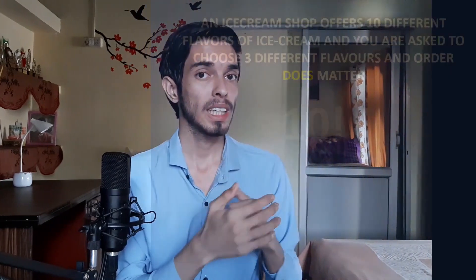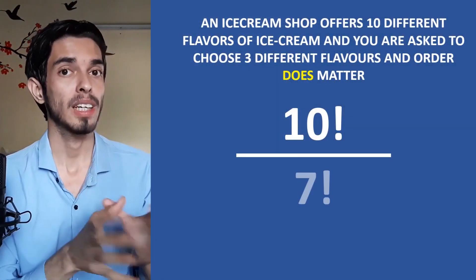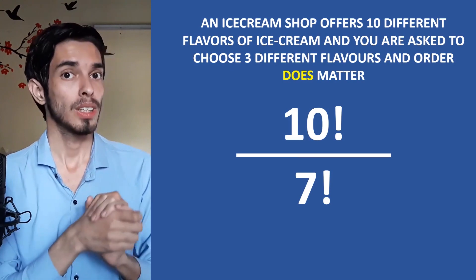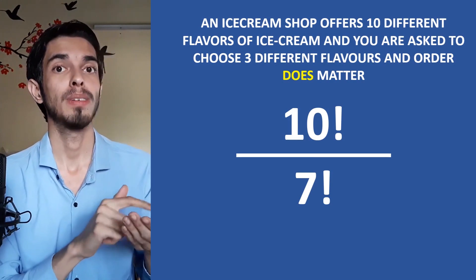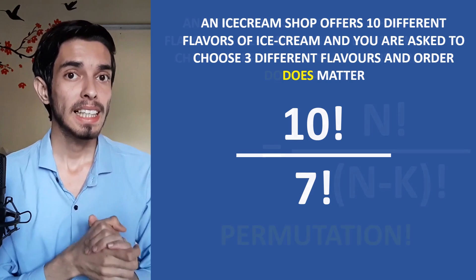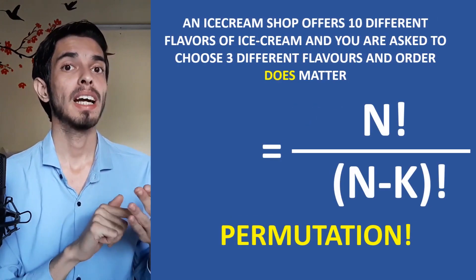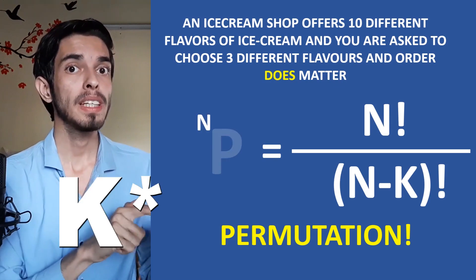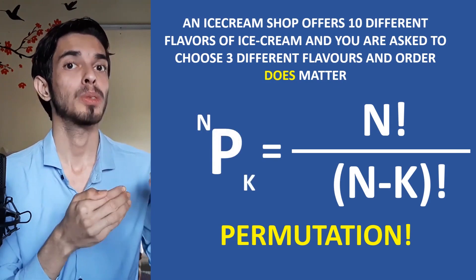The second important formula is permutation, which is similar to combination, but here the order of the chosen K things does matter. Since order matters, we do not divide by K factorial. So the formula becomes N! ÷ (N−K)!, written as nPk, where P stands for permutations. For our example, this would be 10! ÷ 7!.